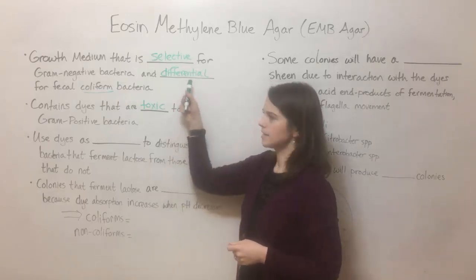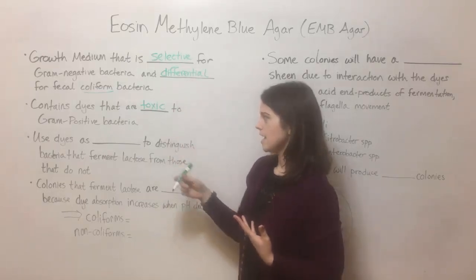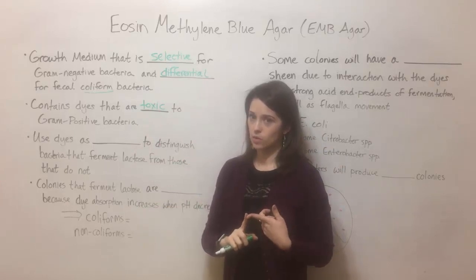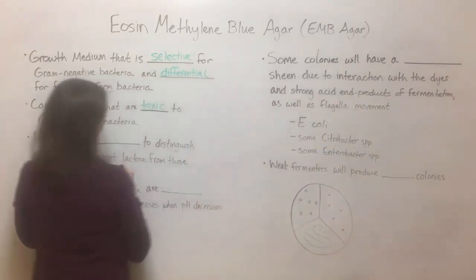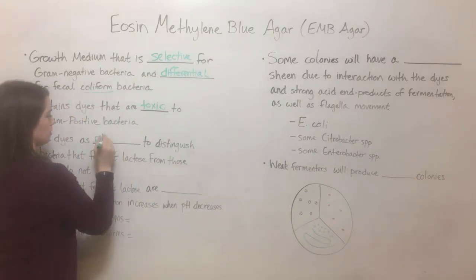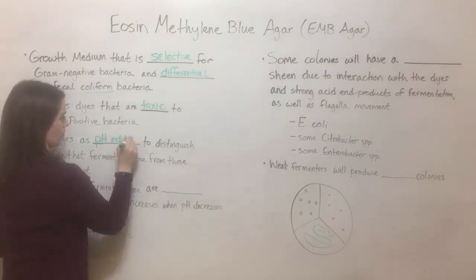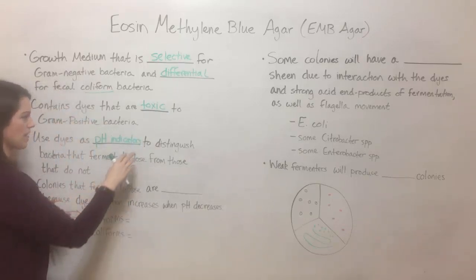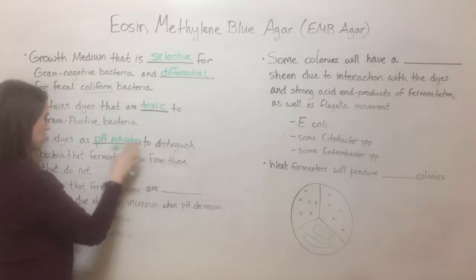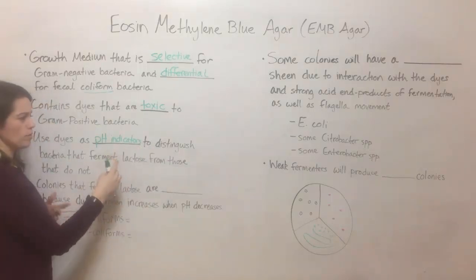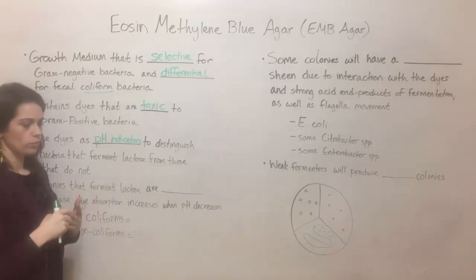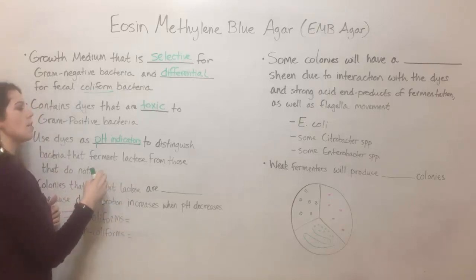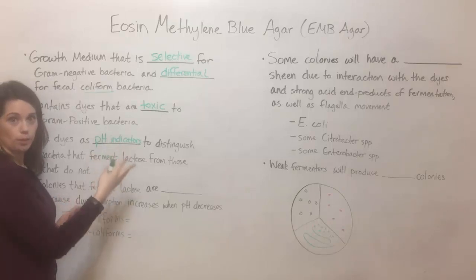Let's talk about how EMB agar performs its differential characteristic. It uses those same dyes — eosin and methylene blue — that are also toxic to gram-positive bacteria, and uses them as pH indicators. These dyes form a dark purple at low pH, which allows you to distinguish bacteria that can ferment the lactose. Remember that coliforms ferment lactose producing not only gas but an acid, so the acid lowers the pH and that makes the dark purple color show up.